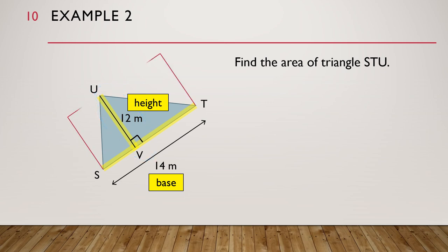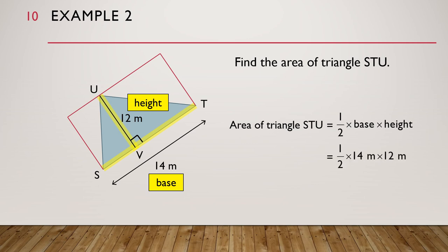Let's draw the related rectangle of triangle STU to confirm. Indeed, ST is the base and UV is the height. The area of triangle STU is equal to half times base times height, which is equal to half times 14 meters times 12 meters. And that is equal to 84 square meters. Now, go and try some questions on your own. Goodbye!